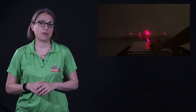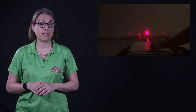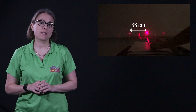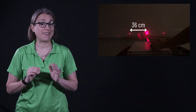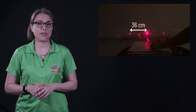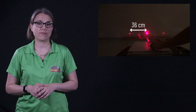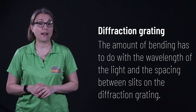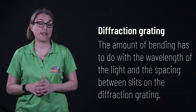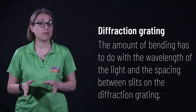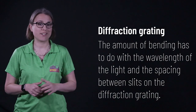We can repeat the experiment one more time, keeping the red laser pointer, but using a different diffraction grating with only 500 lines per millimeter. Because this spacing is larger, the light will bend less. Indeed, it only spreads out 36 centimeters with this diffraction grating. To sum up, the amount of bending that occurs with diffraction has to do with the wavelength of the light and the size of the spacing. The larger the wavelength is compared to the spacing, the more bending will occur.